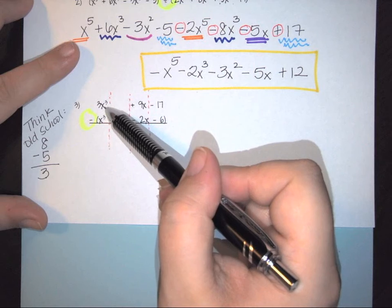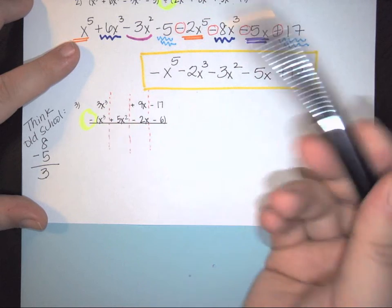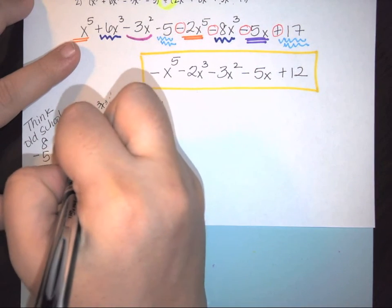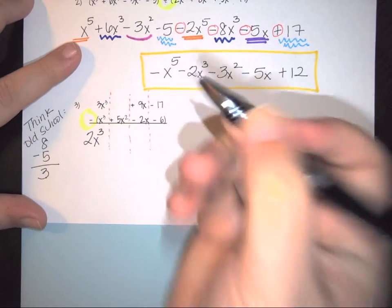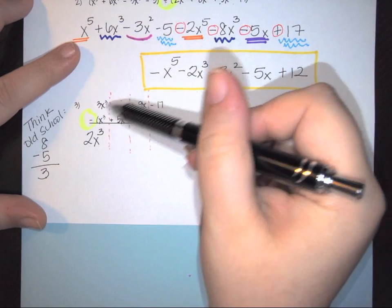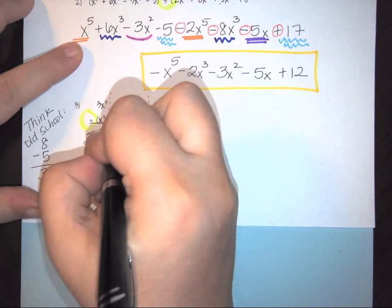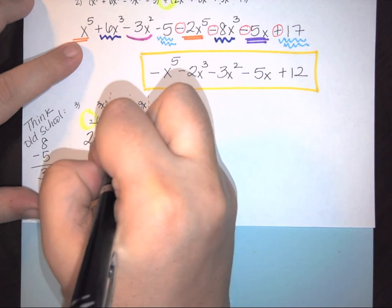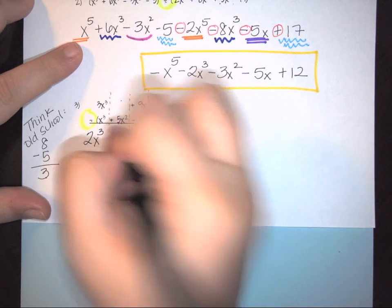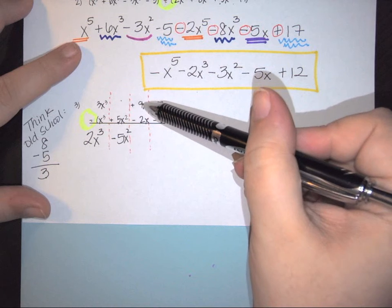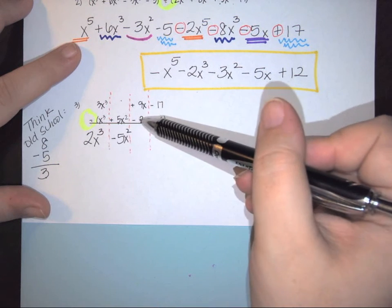So if we look at it, I have 3 minus 1. So this is going to give me a 2x cubed. I have 0 minus 5. So this is actually a negative 5x squared.